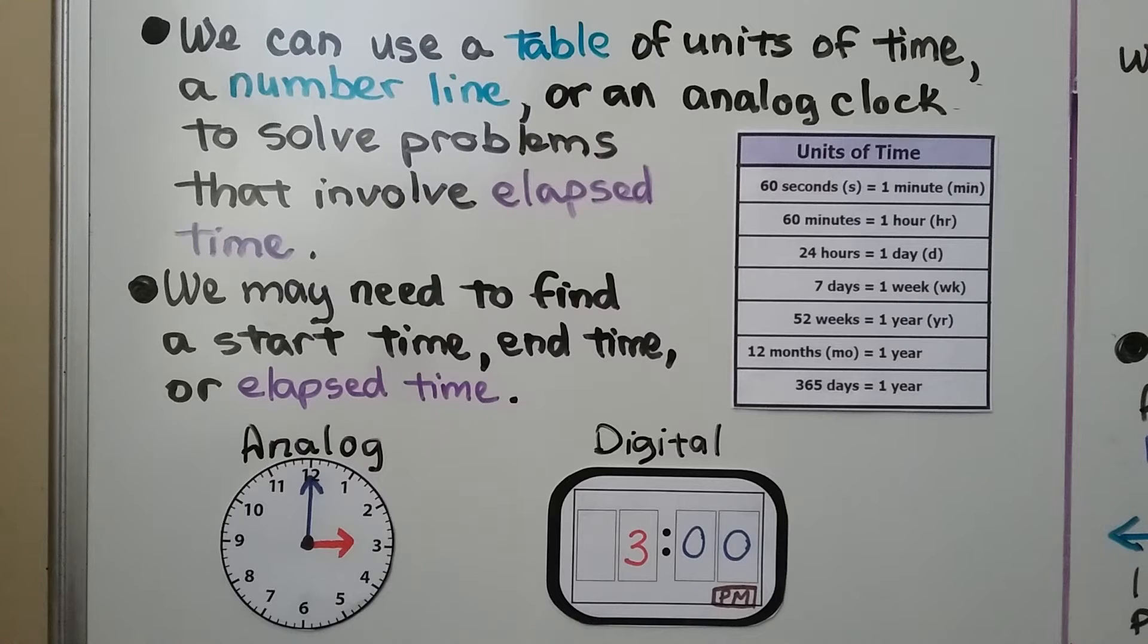We can use a table of units of time, a number line, or an analog clock to solve problems that involve elapsed time. We may need to find a start time, end time, or elapsed time.